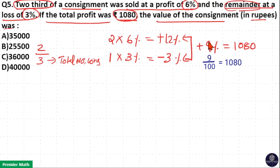9 goes 1 time in 10, 2 times in 80. So, 120 times in 1080. Now, 1% is 120 means 1 unit value is equal to 12,000.